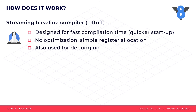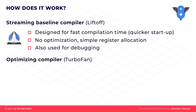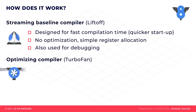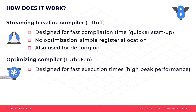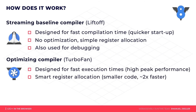The next compile step has already been triggered in the background. It uses our optimizing compiler TurboFan — the same compiler that is also used for the top tier in JavaScript. It produces about twice as fast and more compact code. Function after function will eventually be replaced by their high-performance instances, and after a few seconds the application will run at full speed.